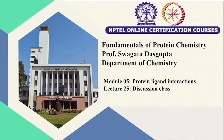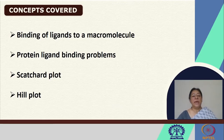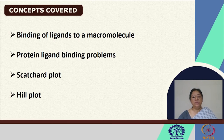In our last class of protein-ligand interactions, this module 5, we will be discussing the several methods involved in protein-ligand binding and work out some problems related to the discussions from the previous lectures. We will be looking at the bindings of ligands to a macromolecule, and look at some specific plots — the Scatchard plot and the Hill plot — with specific examples of how they may be calculated and understood.